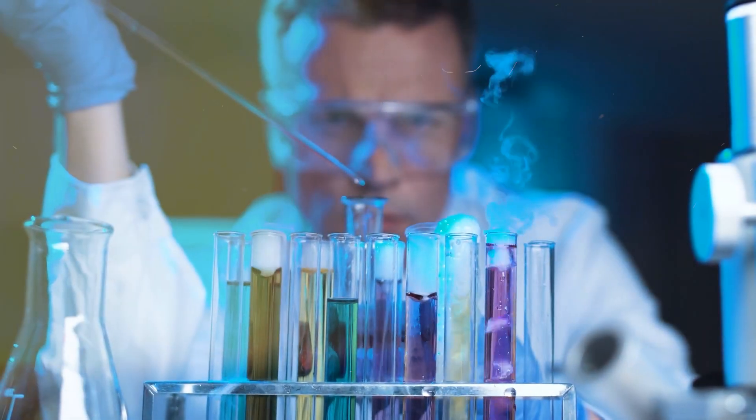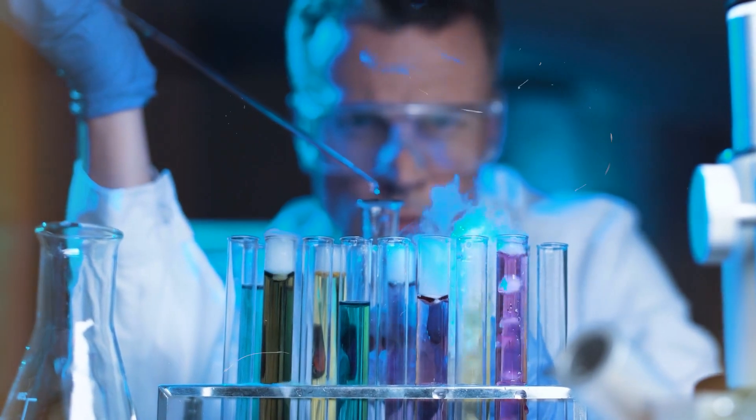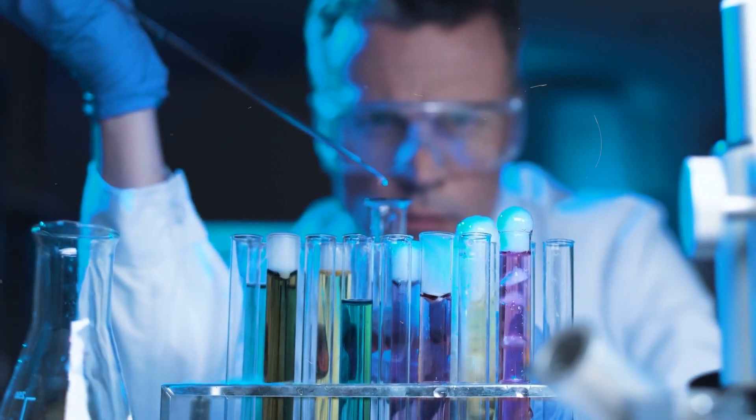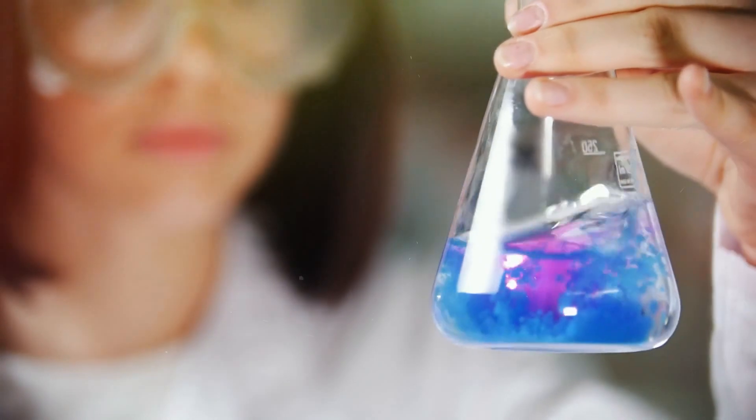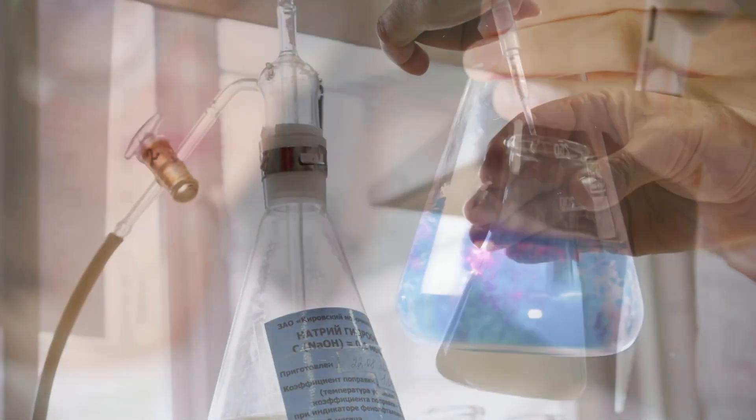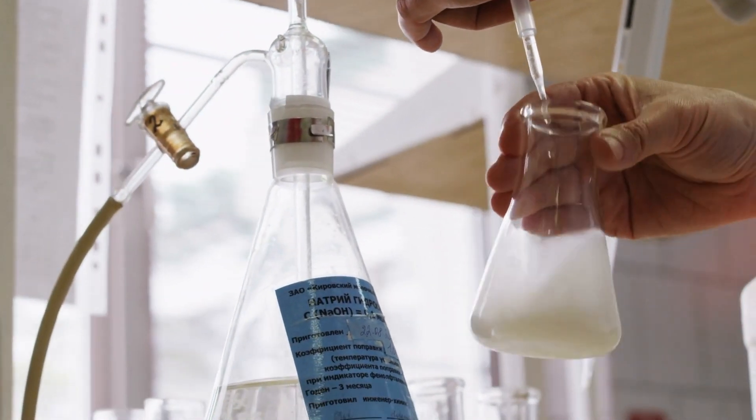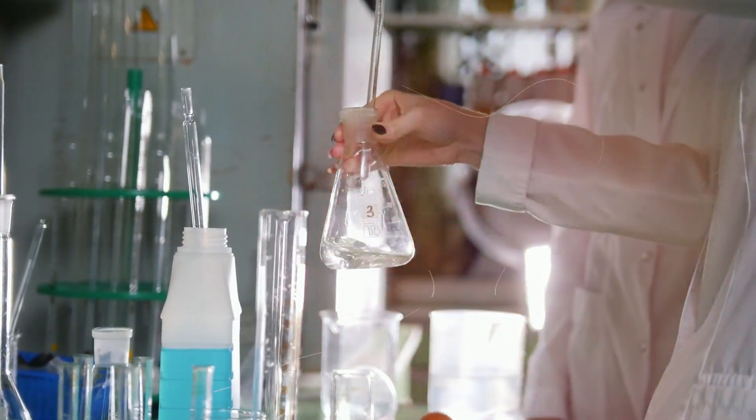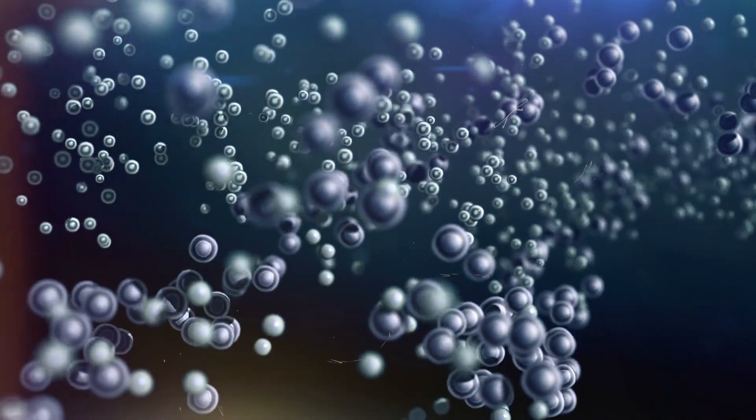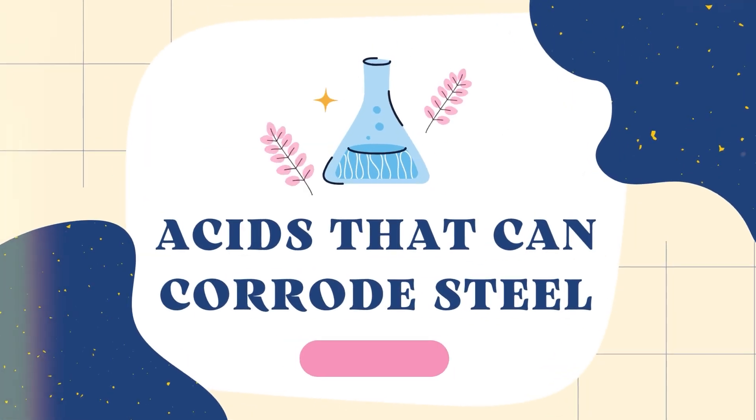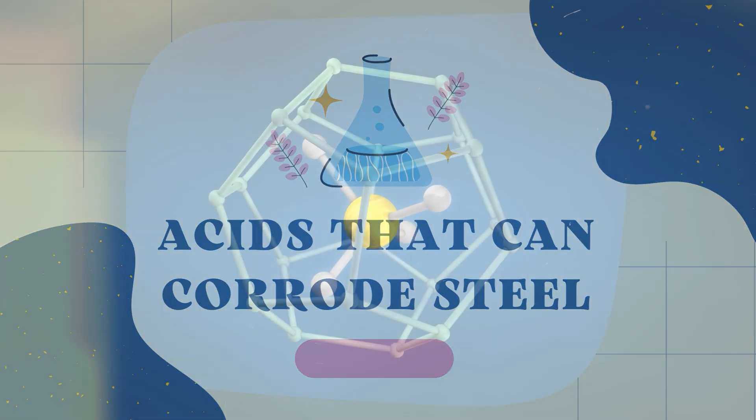Bases can counteract the effects of acids, but in the context of this video we'll primarily focus on acids and their impact on steel. The strength of an acid depends on its ability to donate hydrogen ions. Strong acids fully dissociate in water, releasing all their hydrogen ions, while weak acids only partially dissociate, producing fewer hydrogen ions.